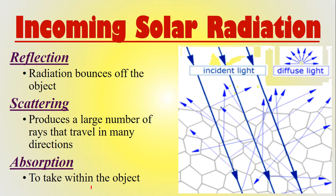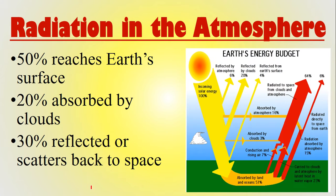So what can happen to incoming solar radiation? First, reflection, where the radiation bounces off of an object — there's stuff in the atmosphere that the radiation hits and it just reflects right back to space. There is scattering, which produces a large number of rays that travel in many directions — scattering is one of the reasons why the sky is blue. And absorption is when the object takes it in and uses it. Now, 50% of all radiation from the sun reaches Earth's surface, 20% is absorbed by clouds, and 30% is reflected or scattered back to space.